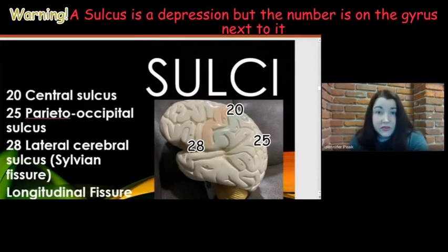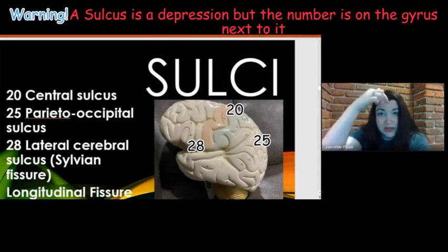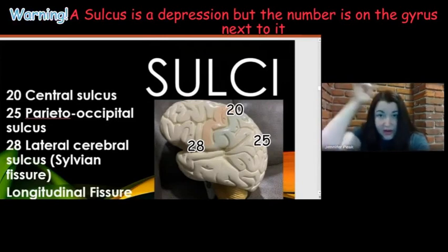The longitudinal fissure is not shown and has no number on this model, but it is the hemisphere divider — it goes straight down the middle of the brain.